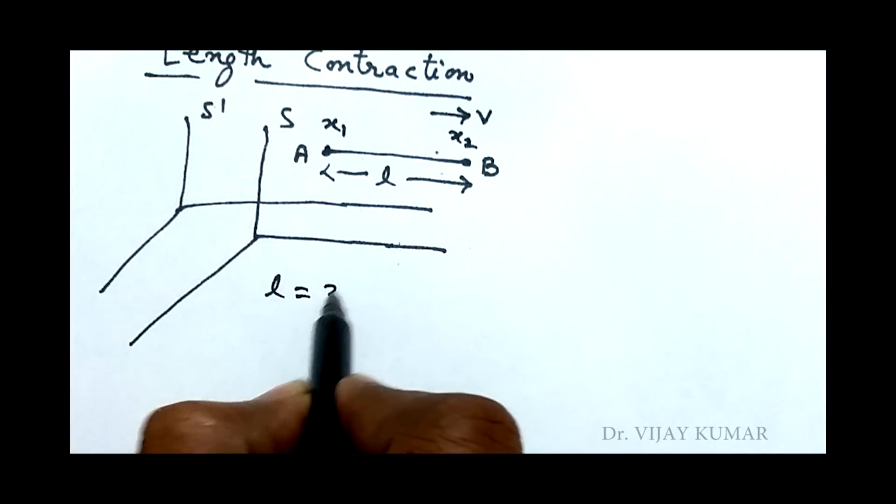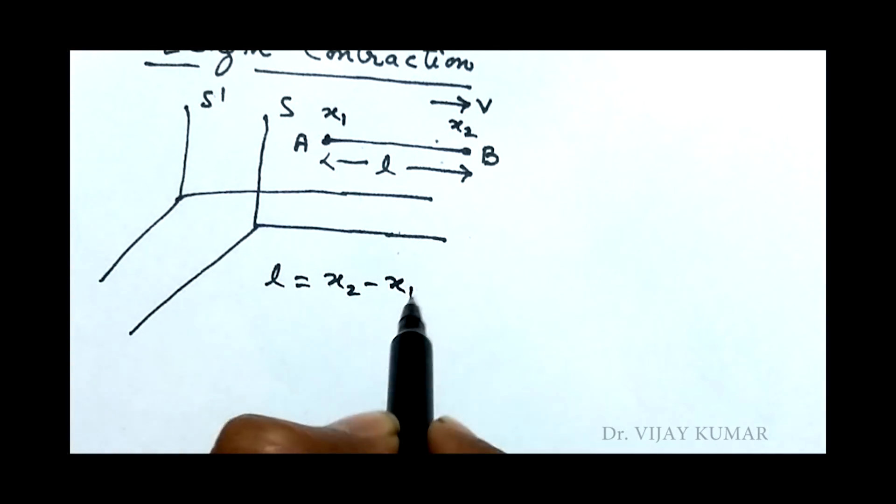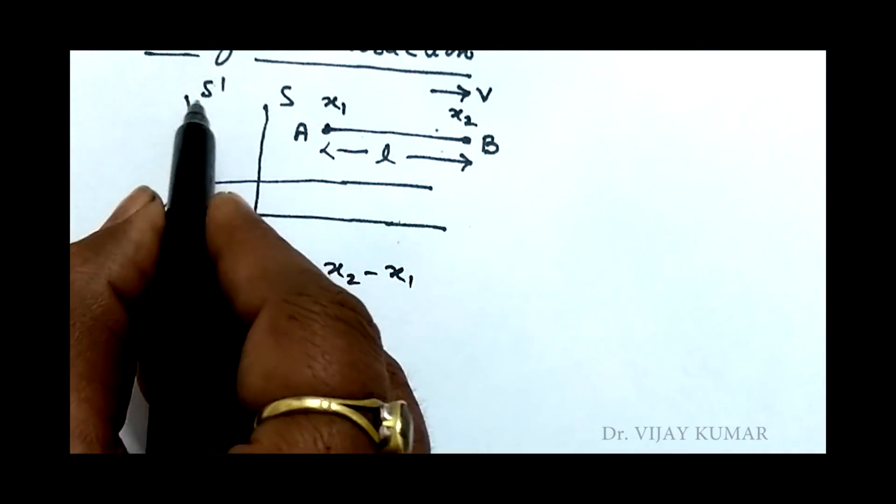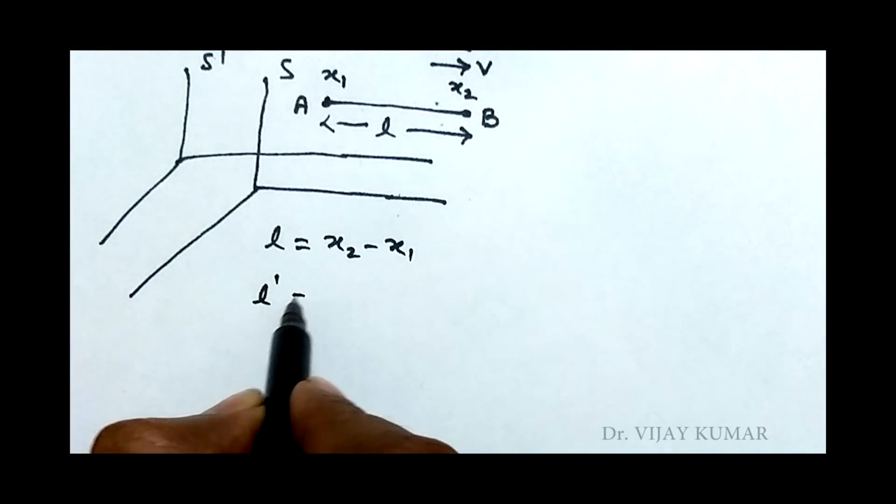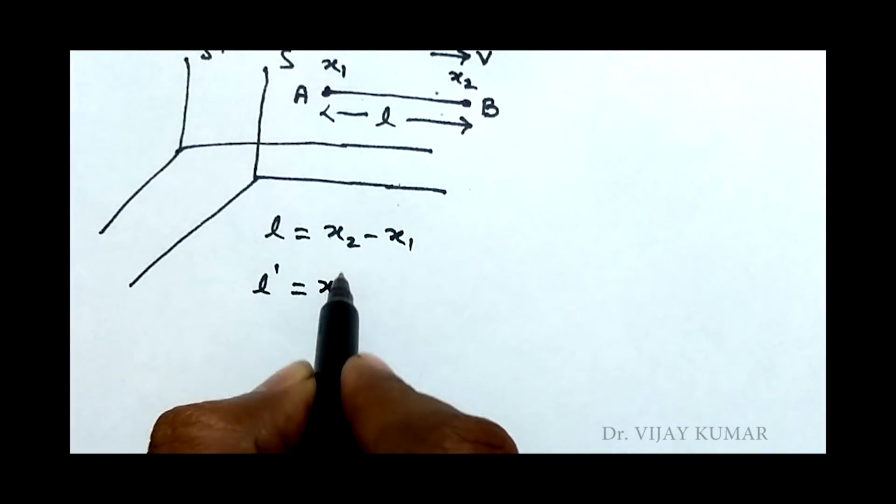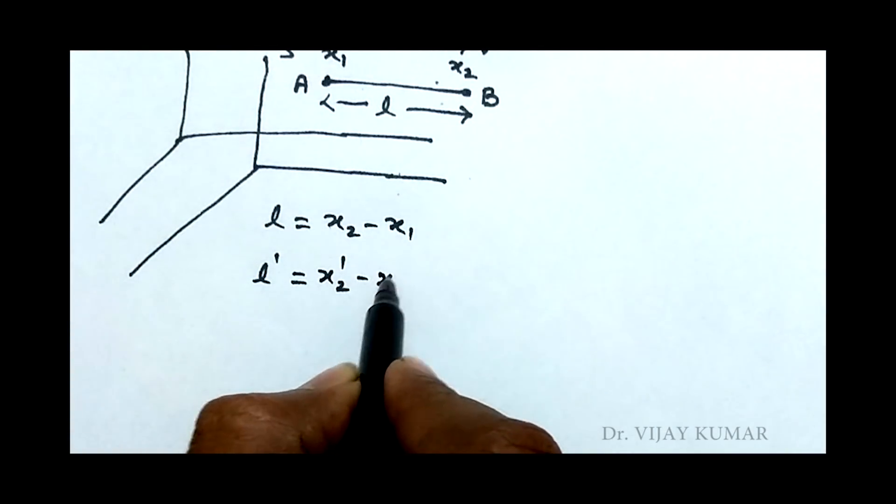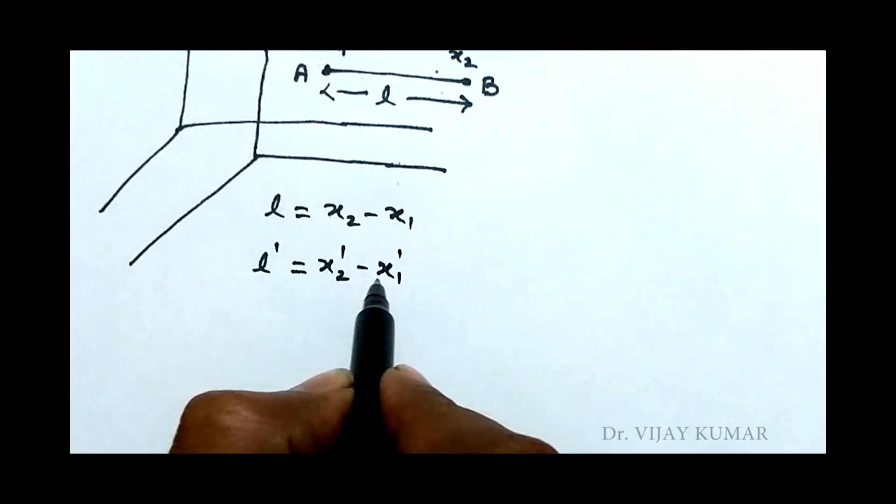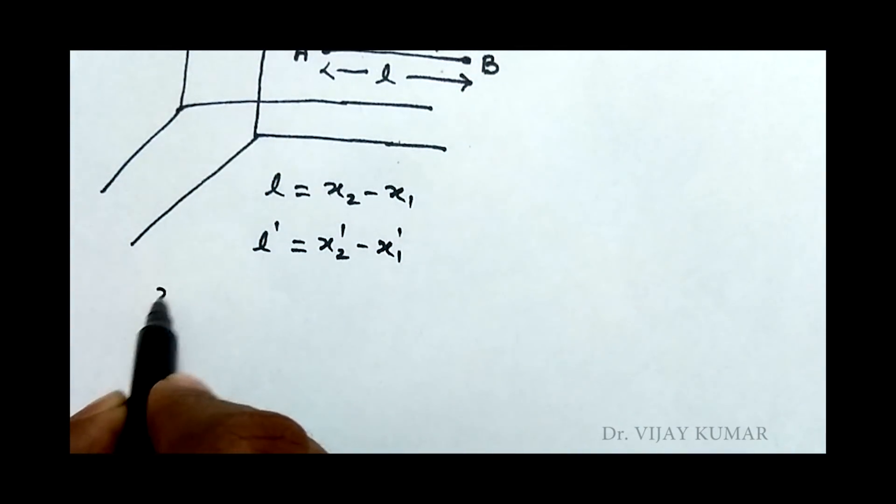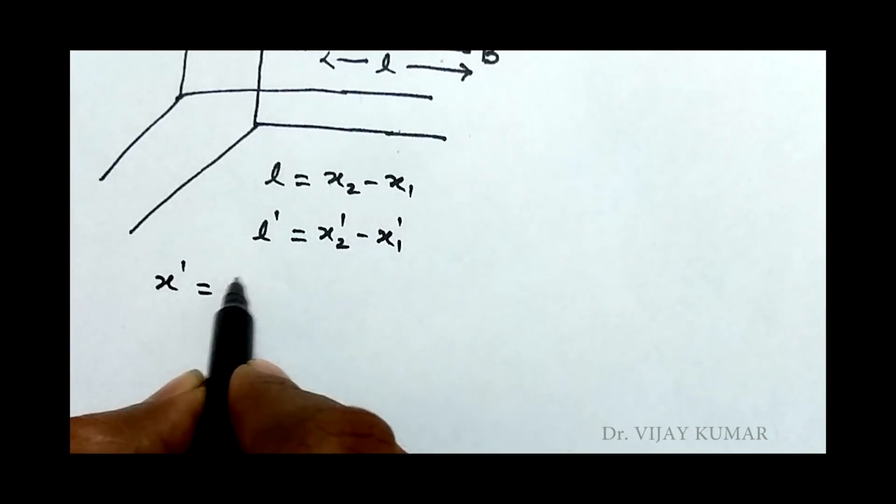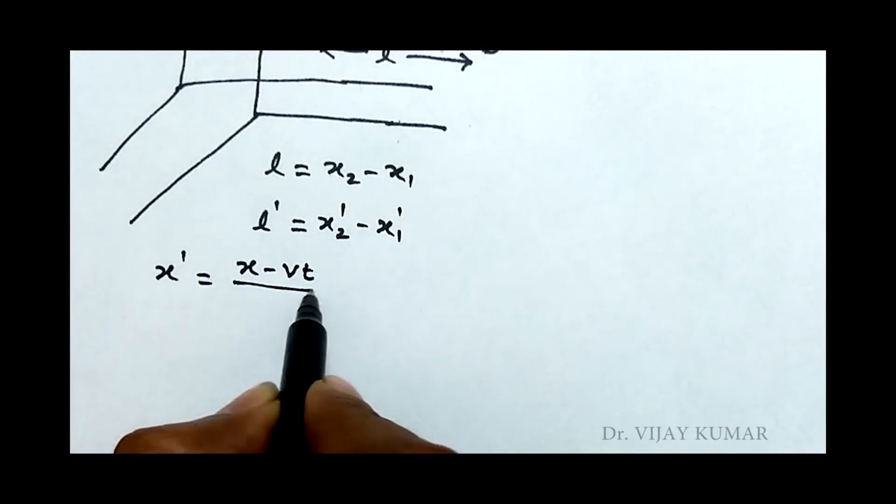It means L becomes x2 minus x1. Suppose in another frame S' the length is L' and coordinates are x2' and x1'. Then length becomes x2' minus x1'. As per Lorentz transformation, x' equals x minus vt upon square root of 1 minus v² upon c².